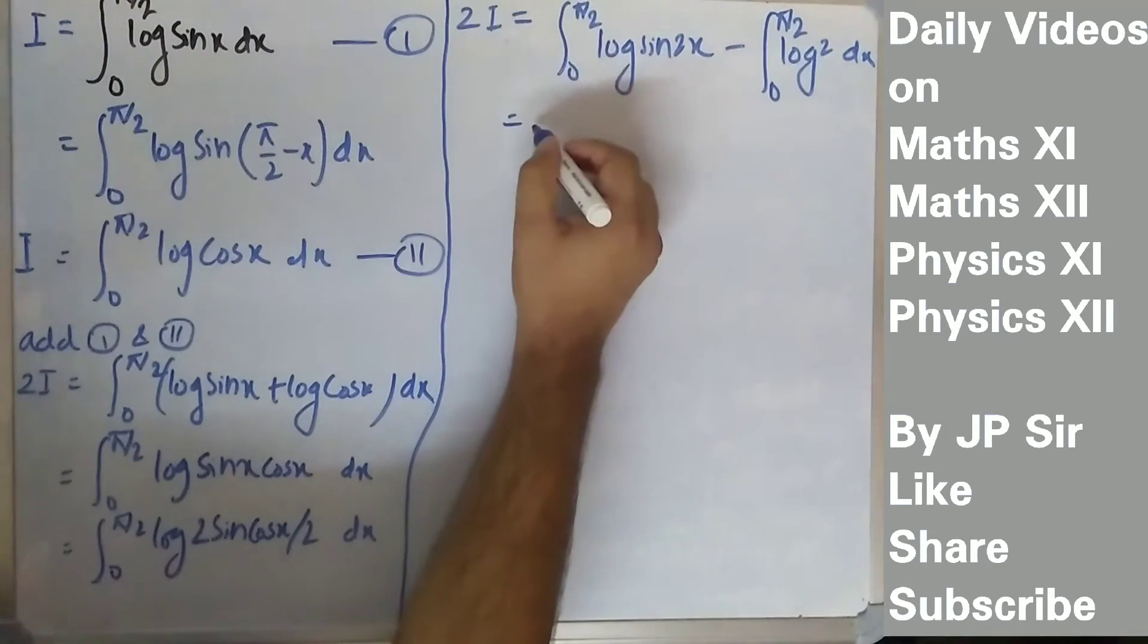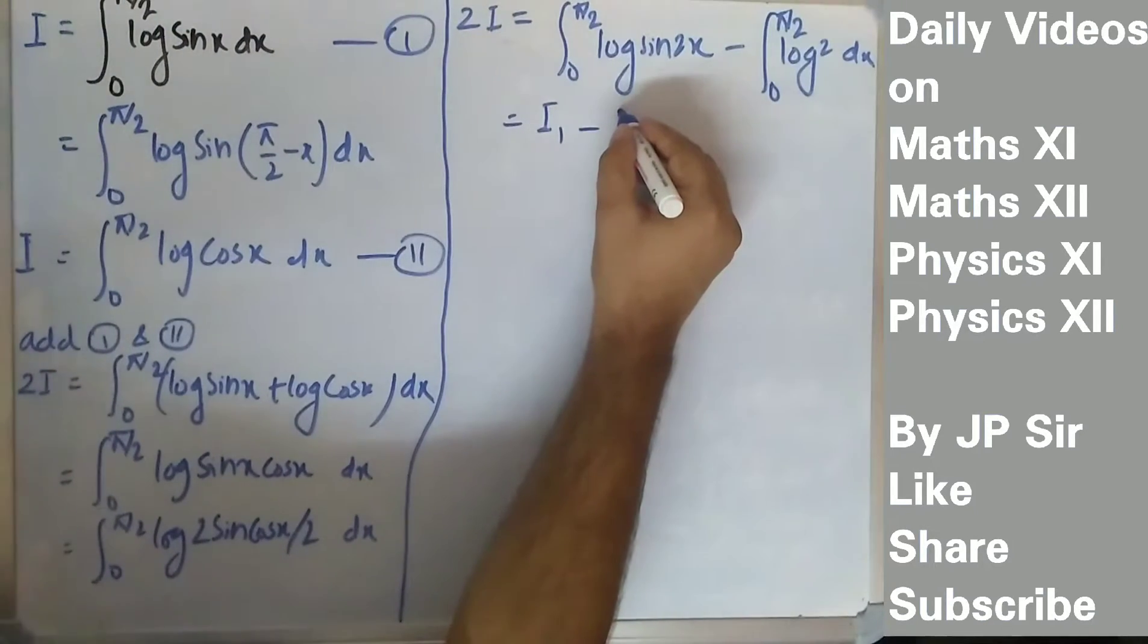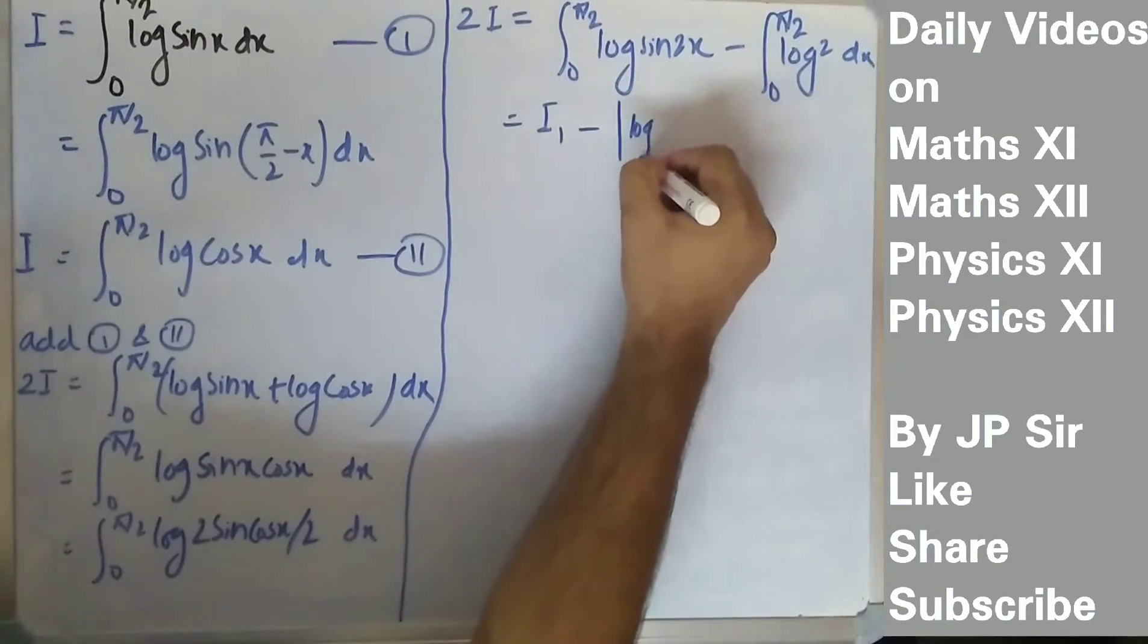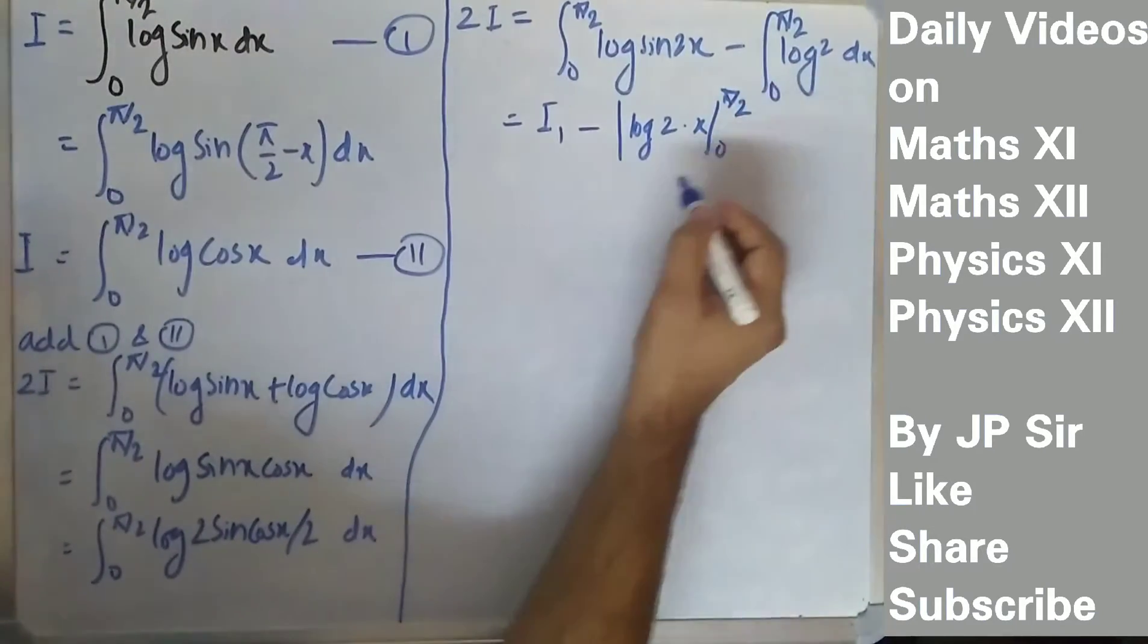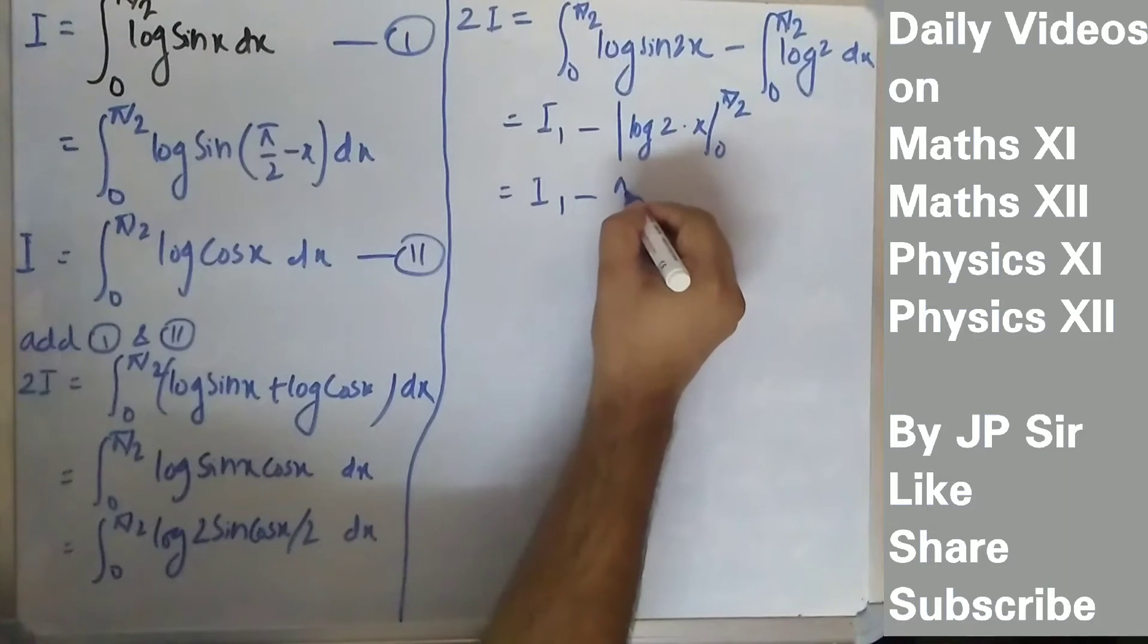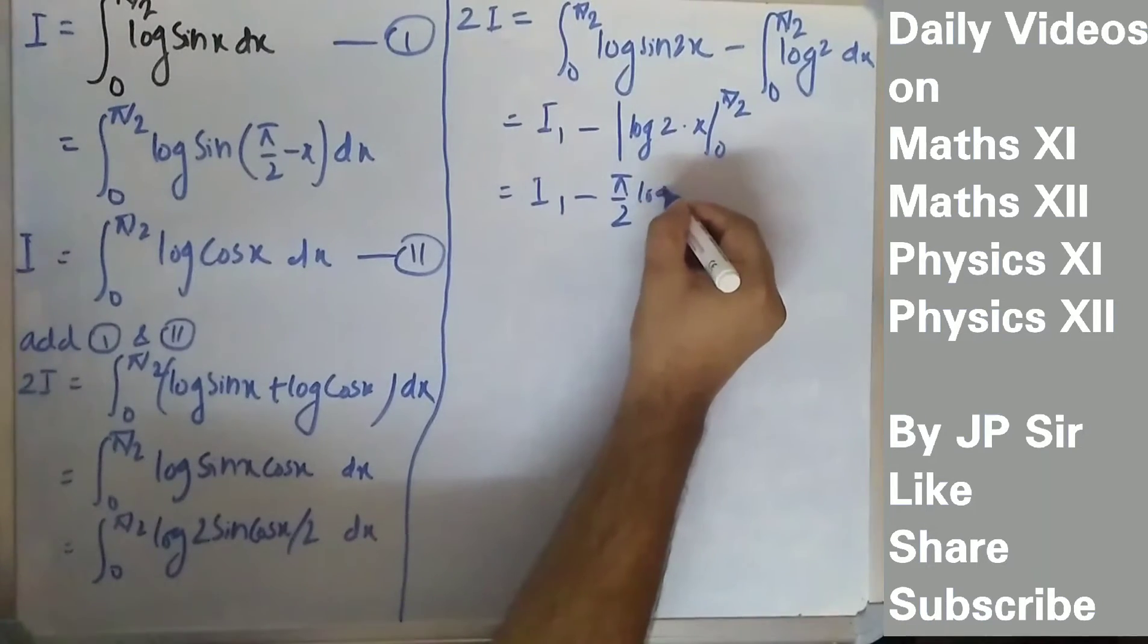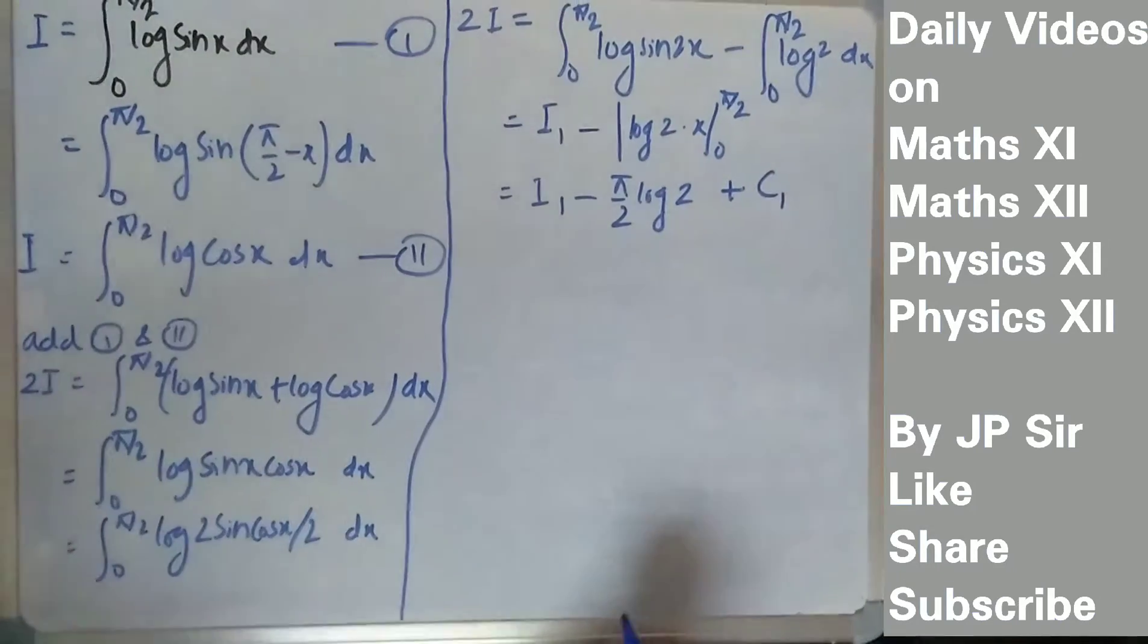We are going to integrate this separately because it is very long integration. Now we will integrate this thing and it is log 2 times x. After applying limits, it will be pi by 2 log 2. You can apply an integration constant c1.